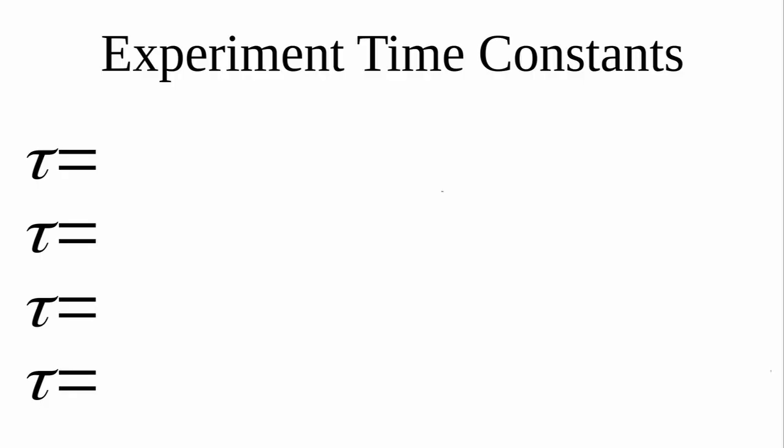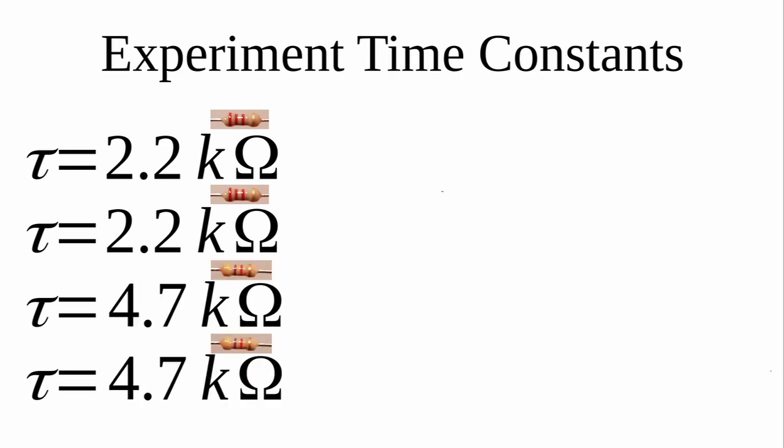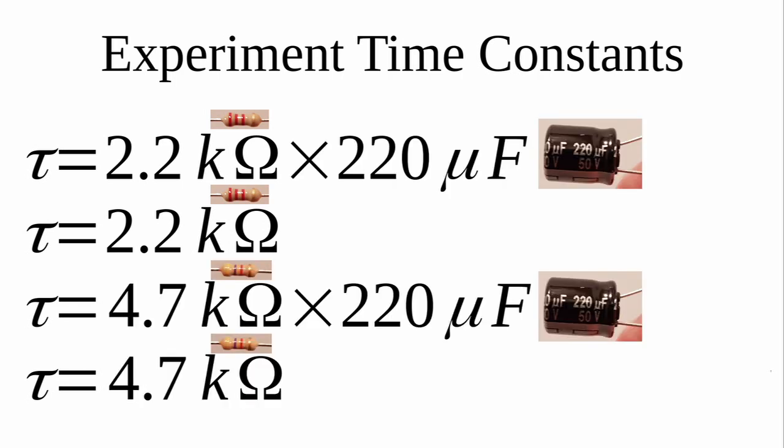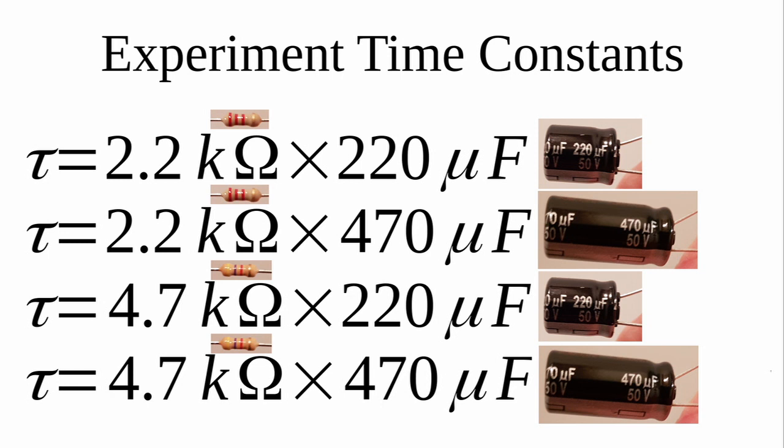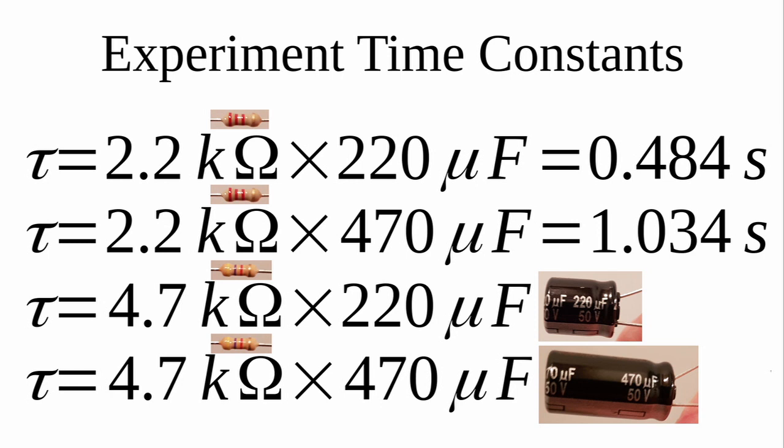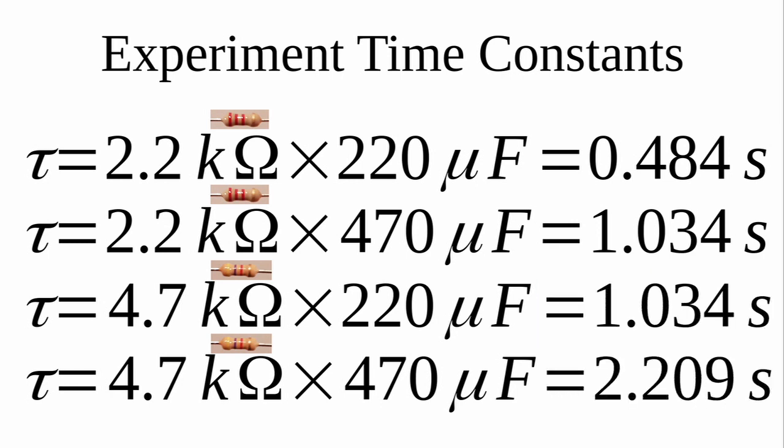I'm going to run the experiments using three different time constants obtained using different combinations of two resistors and two capacitors. The resistors are 2.2 kiloohm and 4.7 kiloohm, and the capacitors are 220 microfarad and 470 microfarad. This results in approximate time constants of 0.5 seconds, 1 second, and 2.2 seconds.